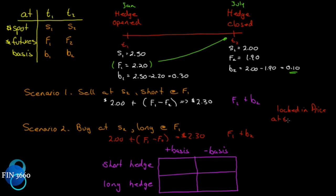In both scenarios we locked in our price at t1 using the futures contract — we expected to pay $2.20. But we're still open to basis risk. We hedged away the undesired price risk in the asset, but even though we eliminate one risk, we open up another: basis risk. So we've traded one risk for another, which is a different thing altogether.